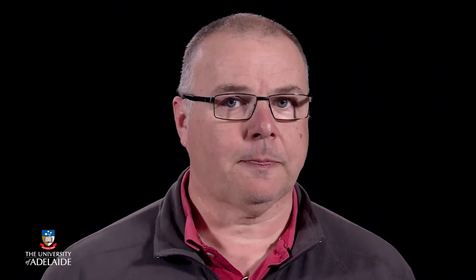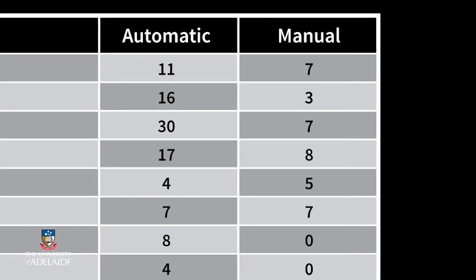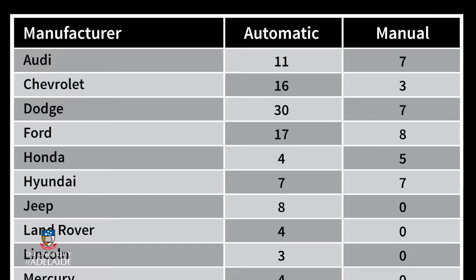The first way to compare the relationship between these is with a contingency table. This consists of looking at the combination of both variables and counting how many observations. To simplify the dataset we consider only automatics and manuals. We see that Audi has 11 cars that are automatic and 7 that are manuals.